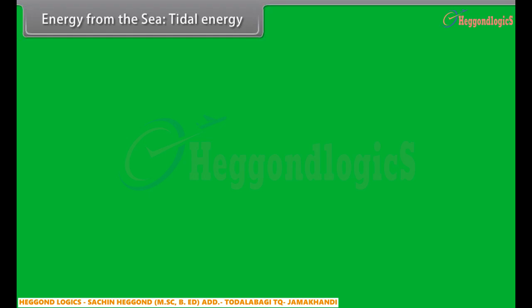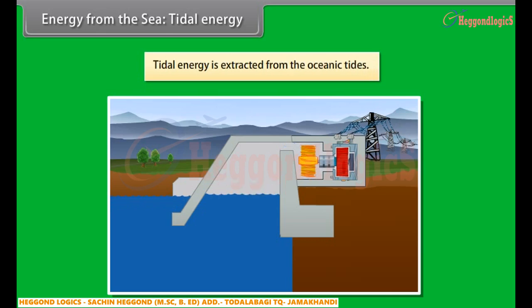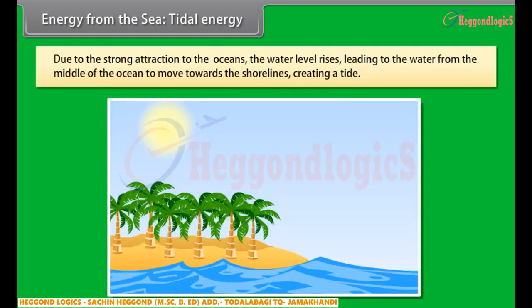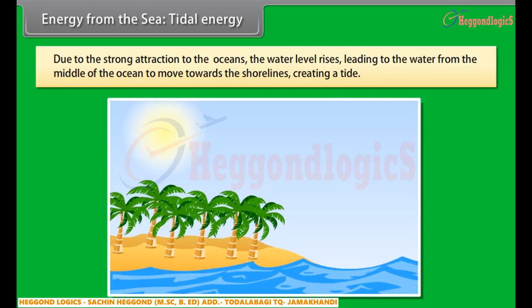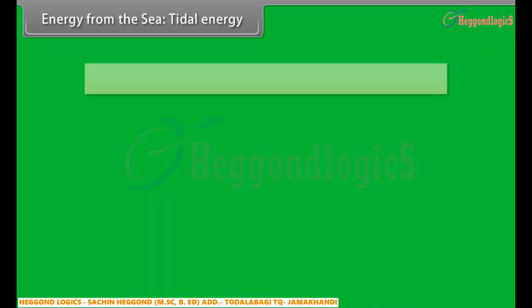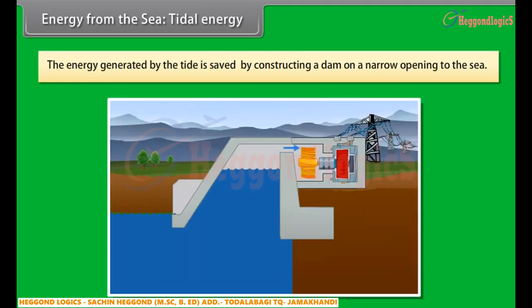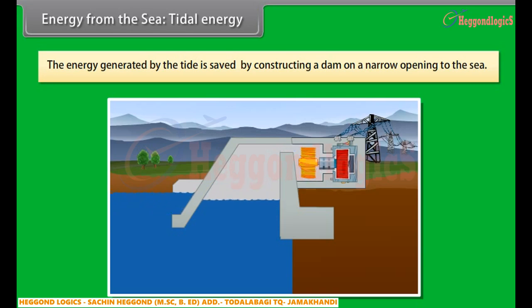Energy from the sea: Tidal energy. Tidal energy is a form of hydropower that converts the energy of tides into electricity and is a renewable source of energy. Tidal energy is extracted from oceanic tides. Tidal forces are periodic variations in gravitational attraction exerted by the moon, creating motions or currents in the oceans. Due to the strong attraction to the oceans, the water level rises, causing water from the middle of the ocean to move towards the shorelines, creating a tide. The energy generated by the tide is saved by constructing a dam on a narrow opening to the sea, and a turbine fixed at the opening converts tidal energy to electricity.